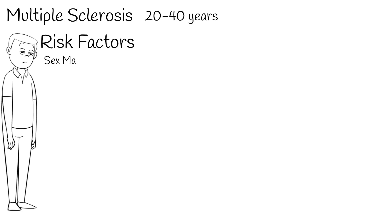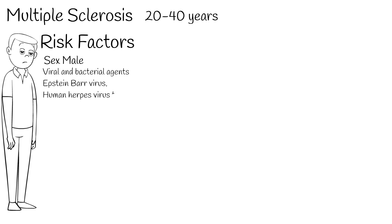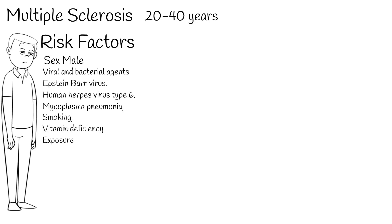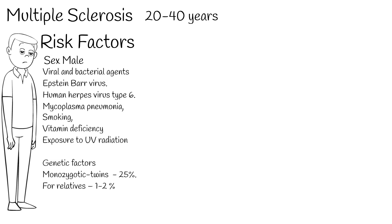Risk factors include environmental factors such as exposure to viral and bacterial agents including Epstein-Barr virus, human herpes virus type 6, and Mycoplasma pneumoniae. Smoking, vitamin deficiency, and exposure to UV radiation are also associated with the onset of multiple sclerosis.